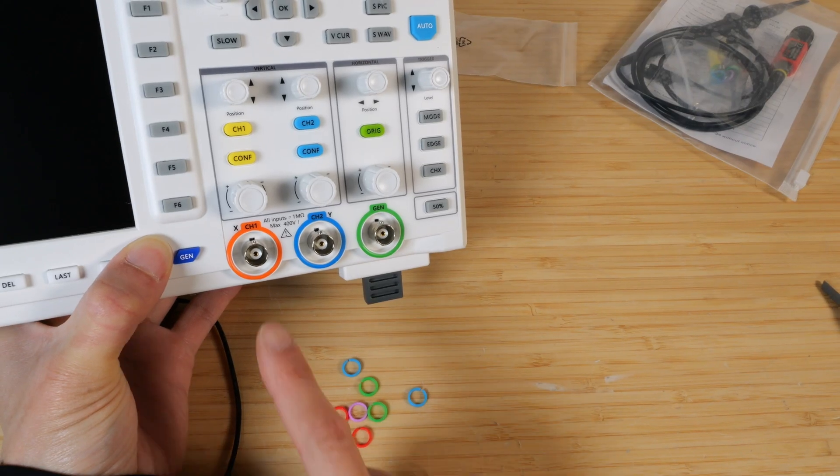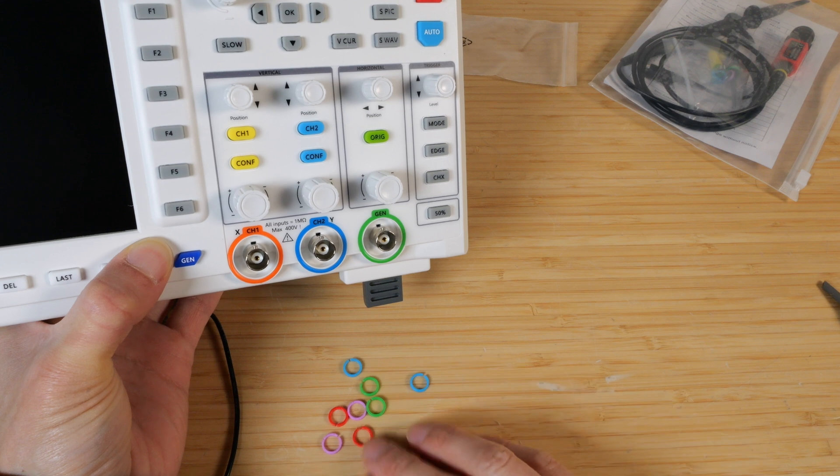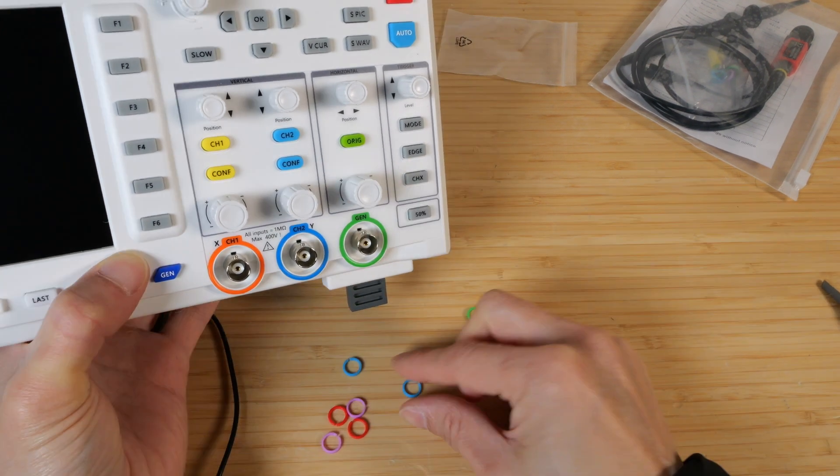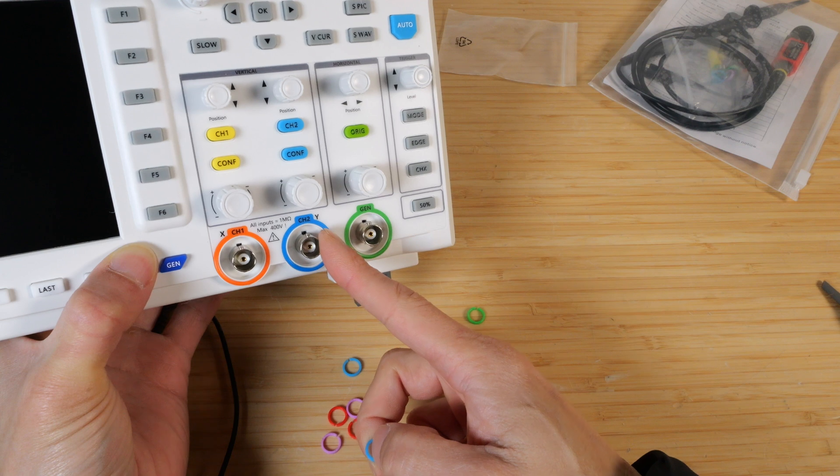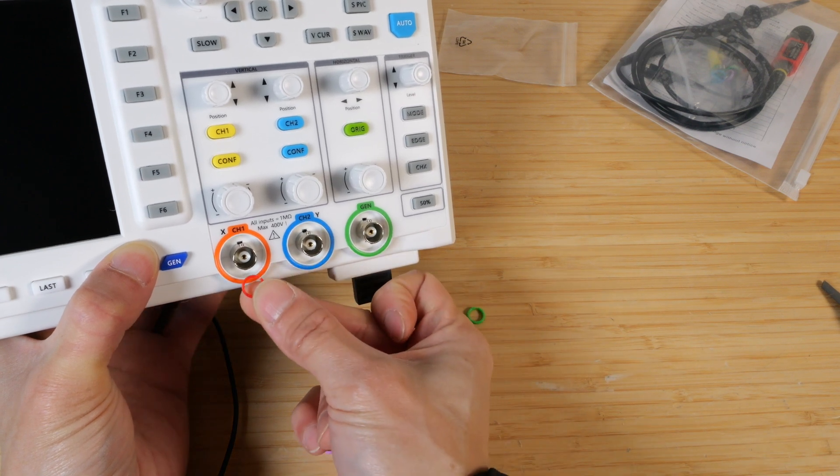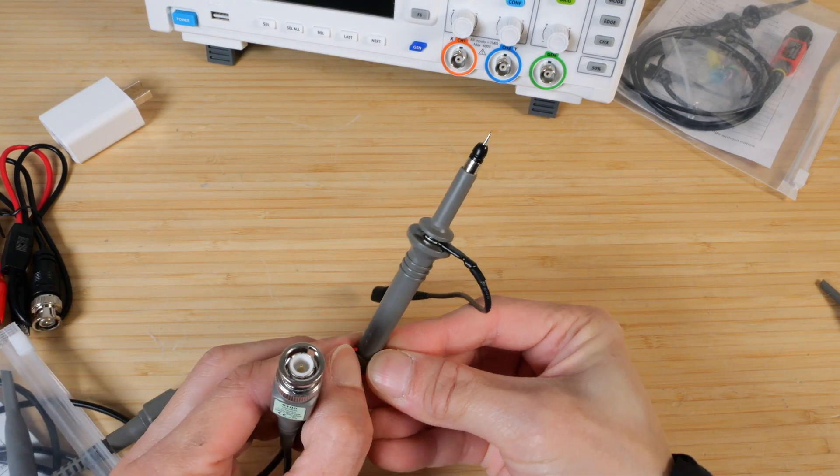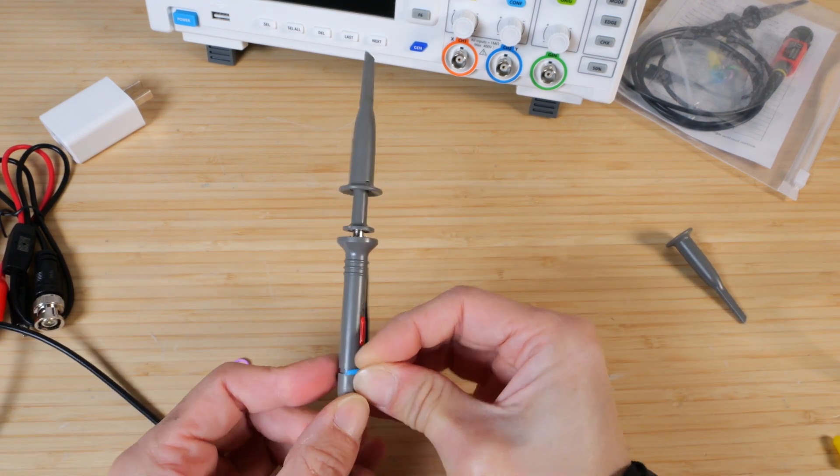There's also a set of rings so that you can color code your probes. I'm kind of disappointed it does not have yellow in this set of rings here. It does have blue though, because I would like to attach these rings to the probe to match the color here. I suppose if we pick red, it's close enough for channel 1. So I'm going to put in the red one for channel 1 and blue for channel 2.